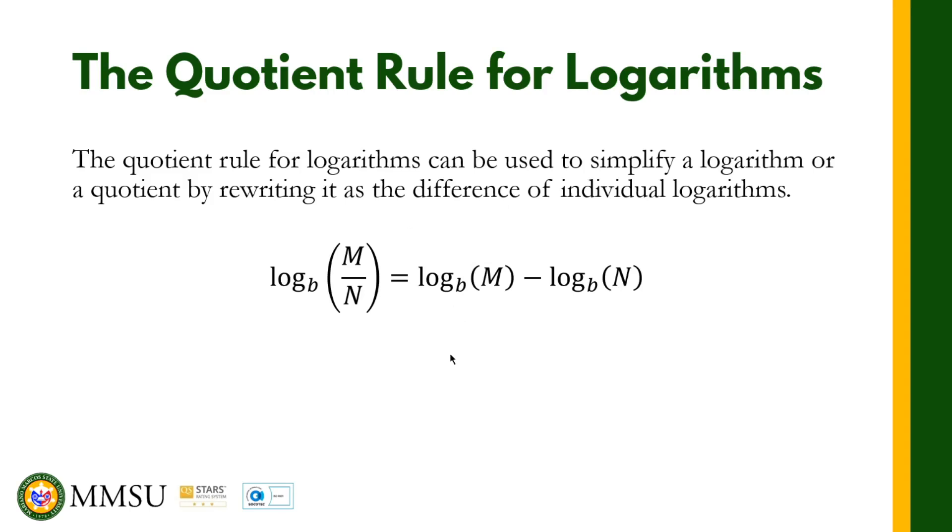You can see the difference now between the product rule and the quotient rule. In the product rule if we have the product M and N we add the two logarithms, but for the quotient rule we are going to subtract the two logarithms.